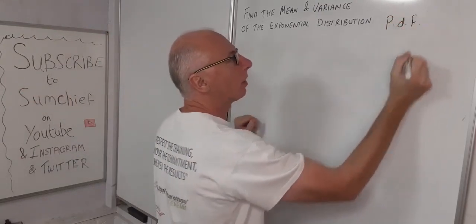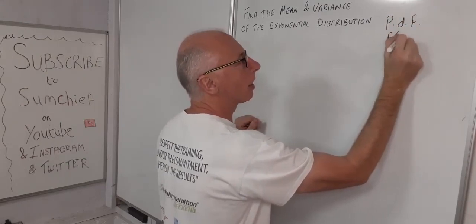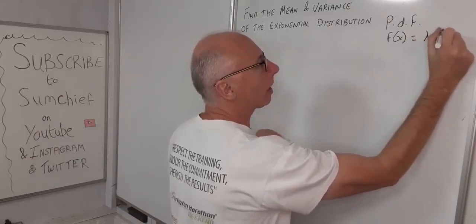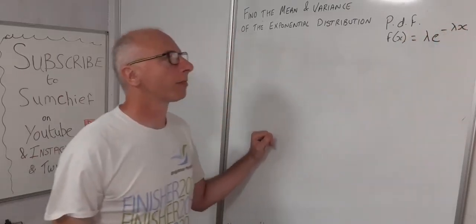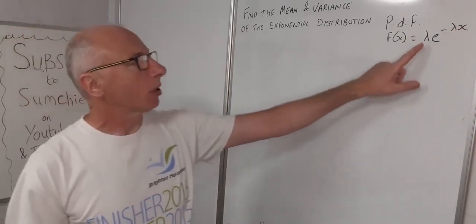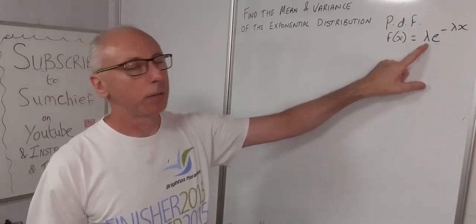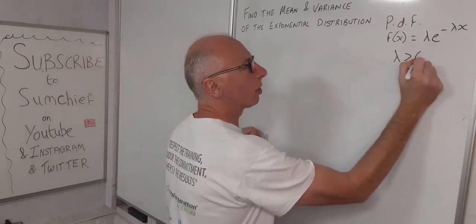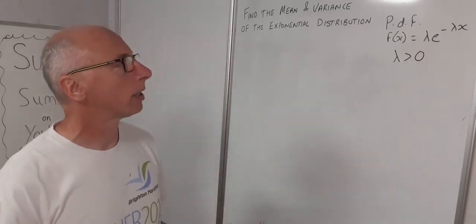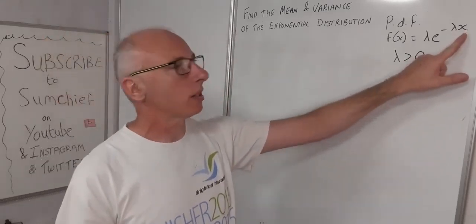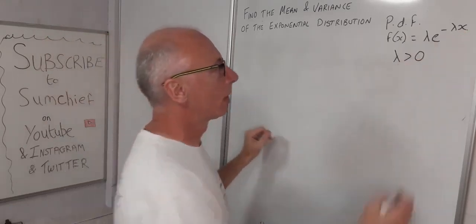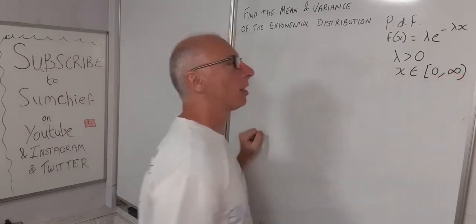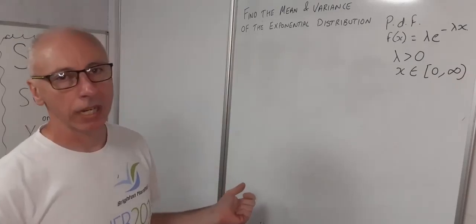Our PDF is f(x) = λe^(-λx). We have two variables: λ is our parameter and for the exponential distribution λ is always greater than zero. The same applies to x, but x can also equal zero, so x ranges from zero to infinity. This will help us find our mean and variance.